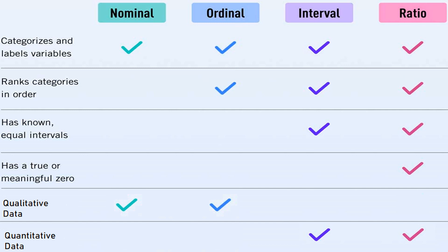Let's summarize all types of measurement scale in one table with characteristics including categorization, levels, rankings, intervals, absolute zero, qualitative data, and quantitative data. The nominal scale is just a category or labeling applied to qualitative data. Ordinal includes nominal properties plus ordering or ranking. Interval includes all nominal and ordinal properties and is applied to quantitative data. Ratio includes all properties of nominal, ordinal, and interval, plus an absolute or meaningful zero, and is also applied to quantitative data.